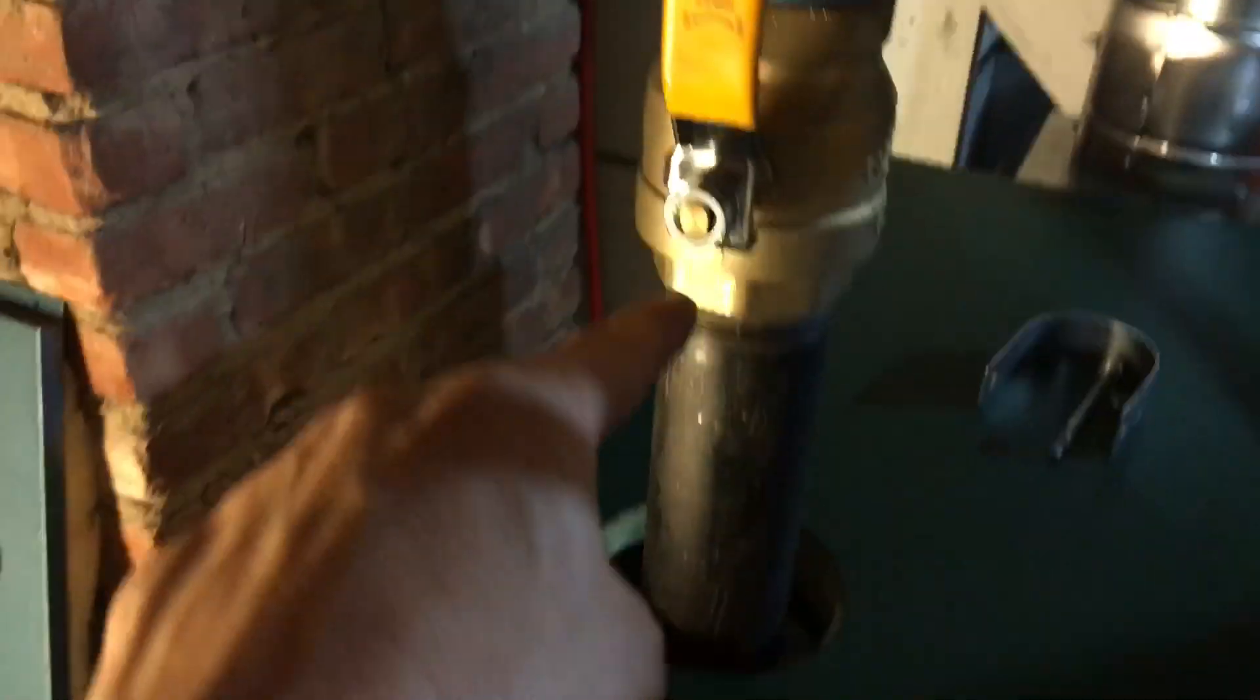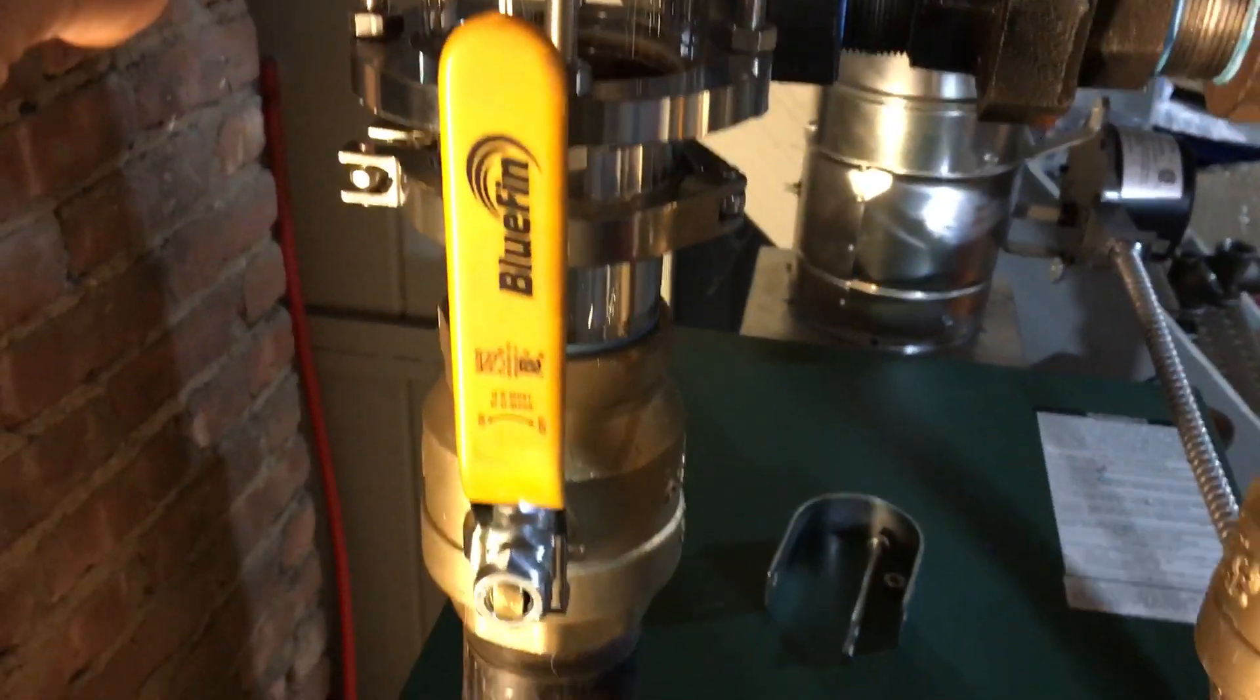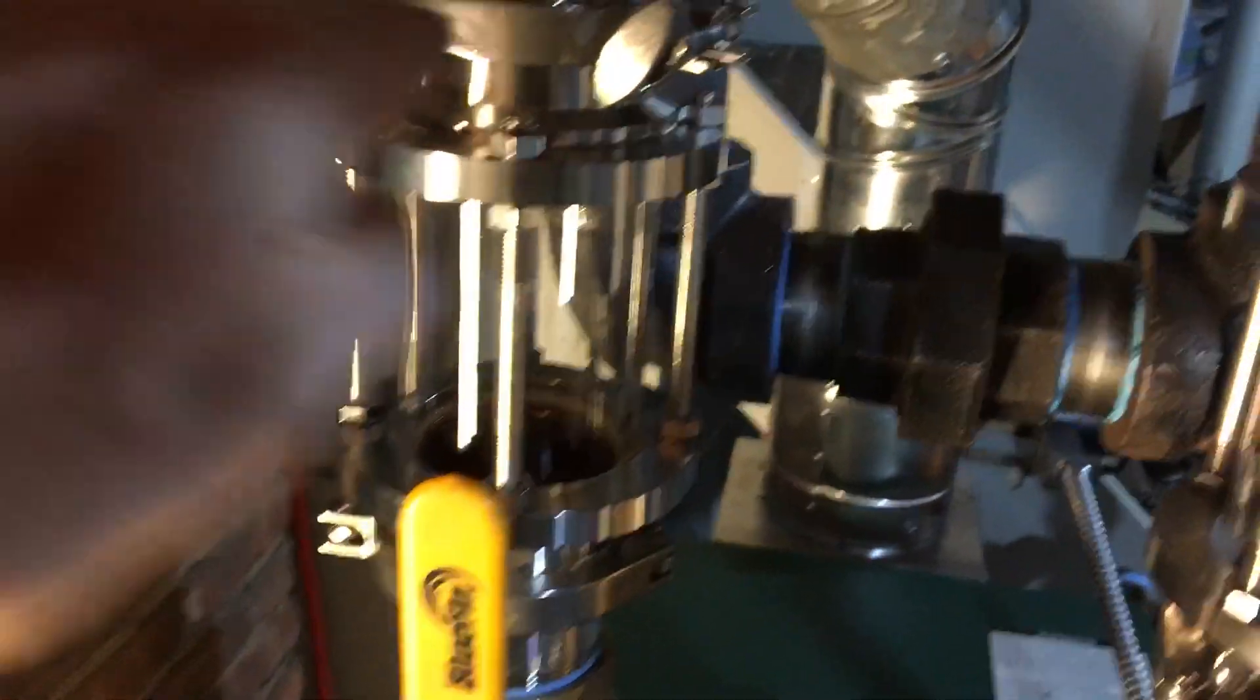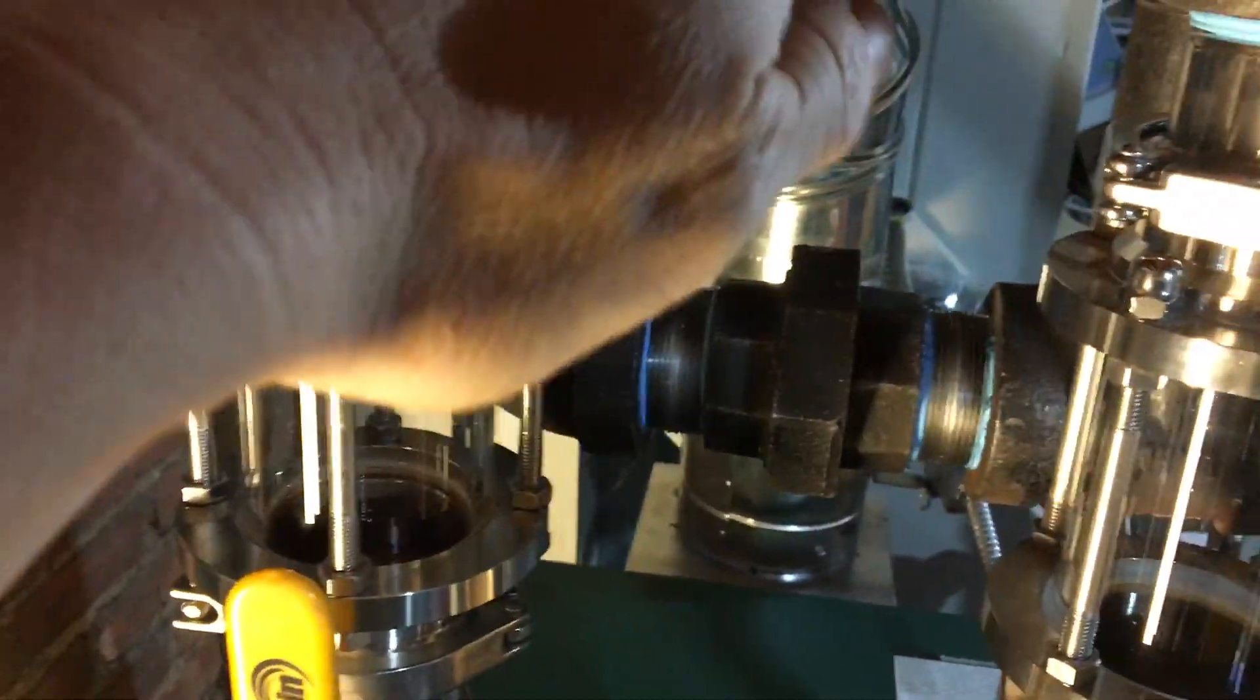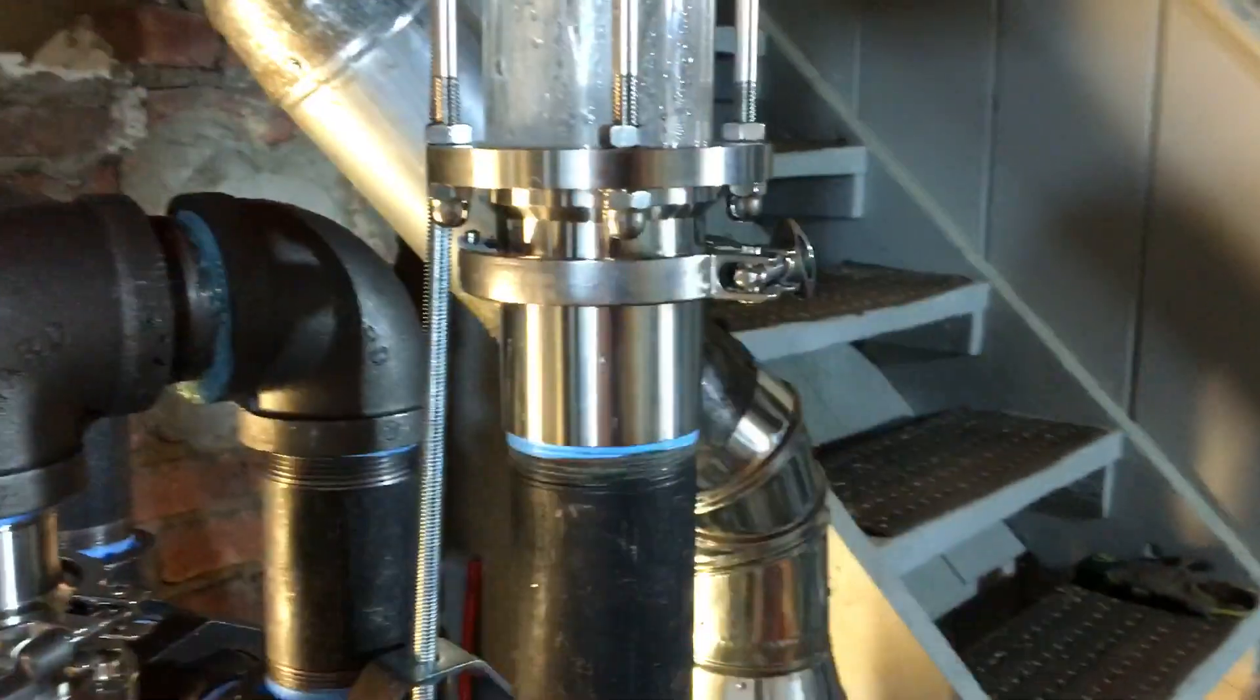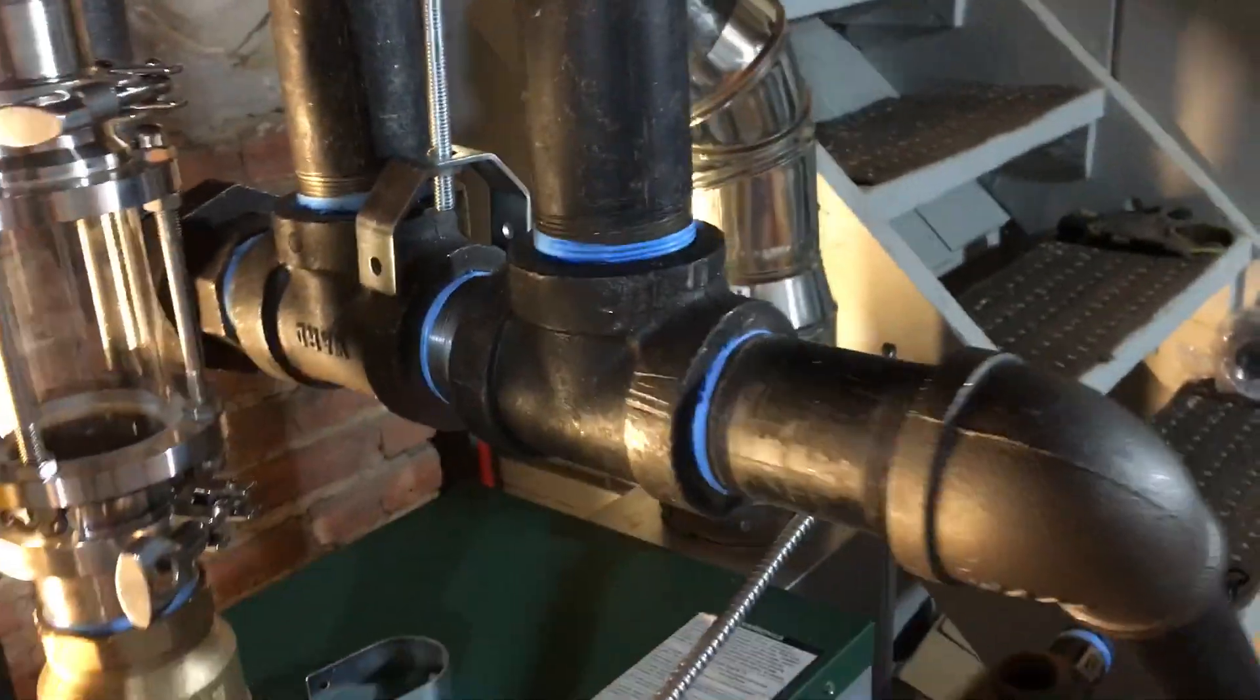So imagine this side here came up like 24 inches above the water line to the header and just came straight over to the header, and then the header came across and went to this riser. That would be what the manufacturer recommends.